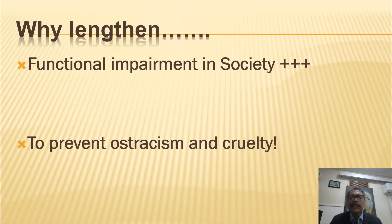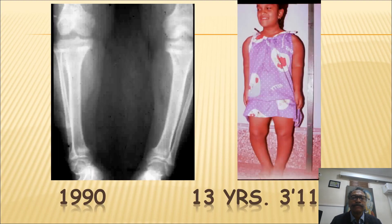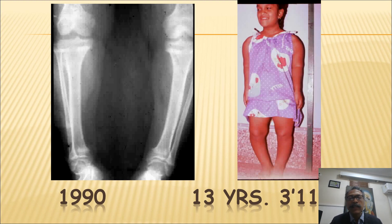The question that arises is: why lengthen people who are dwarfs? Because they have functional impairment in society and to prevent ostracism and cruelty. We started our experience in lengthening achondroplastic dwarfs way back in 1990, starting with a young lady from Bangalore who at the age of 13 years was fully mature and was only 3 feet 11 inches in height.